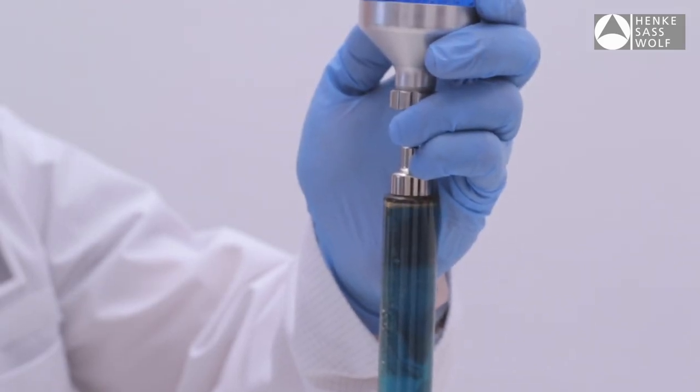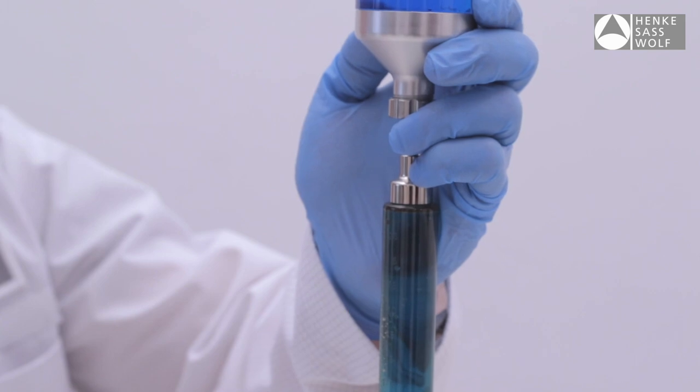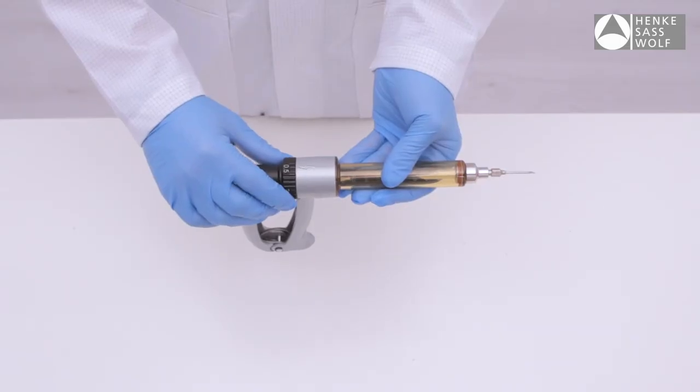Remove air bubbles inside the barrel by pressing the piston slightly forward until air bubbles are removed. The dosage can be adjusted by turning dosage wheel either clockwise or anti-clockwise.